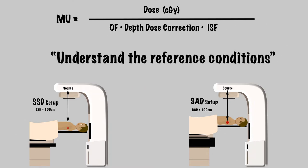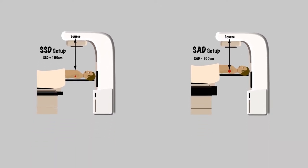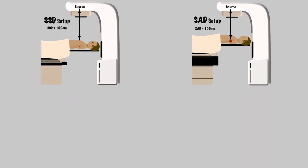This discussion emphasizes that the first step in any MU calculation is to understand the reference conditions used in your clinic or in your question stem. We've also emphasized that a PDD calculation uses an SSD setup. Here's the formula we would use for this scenario. Dose goes in the numerator, and modifiers go in the denominator.